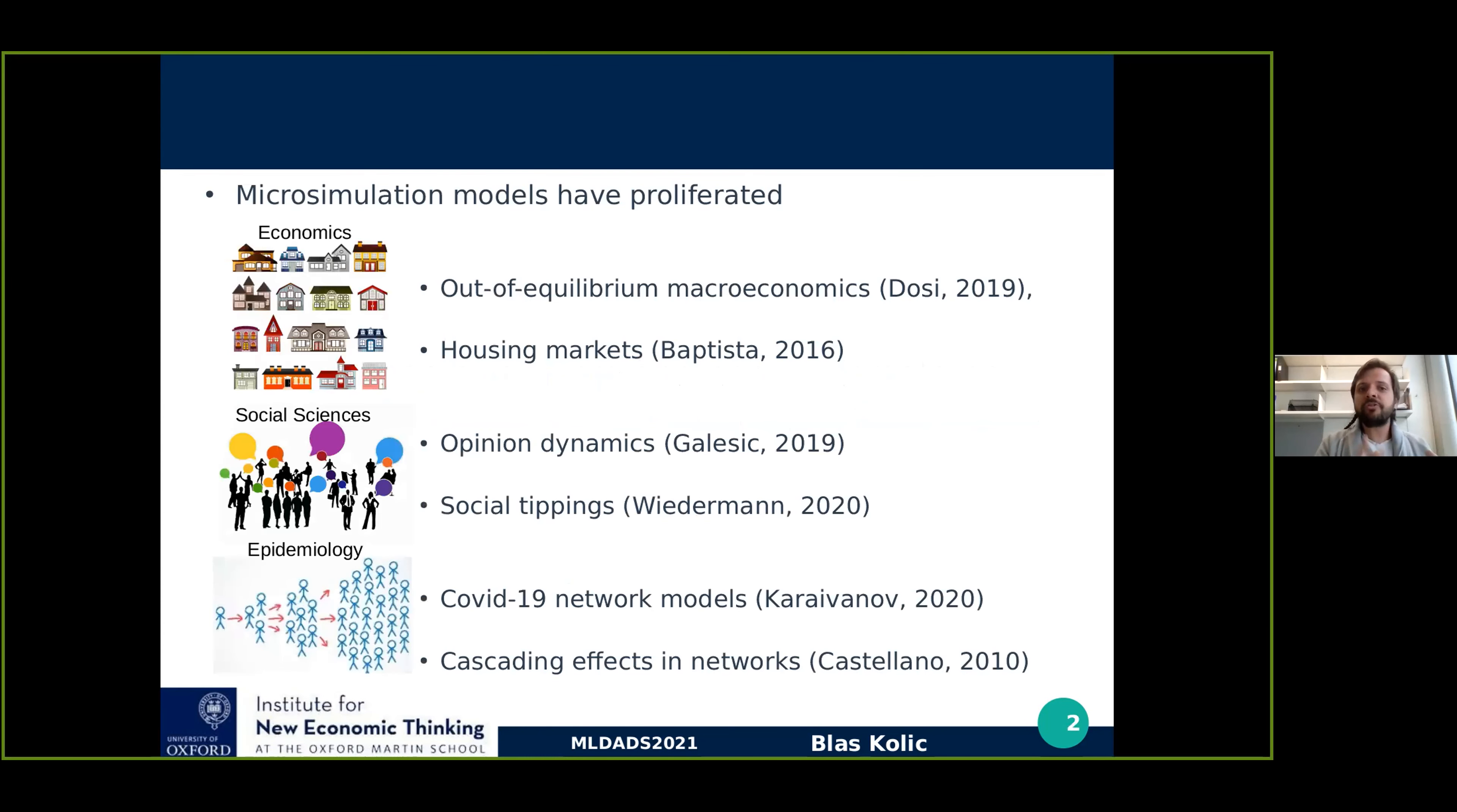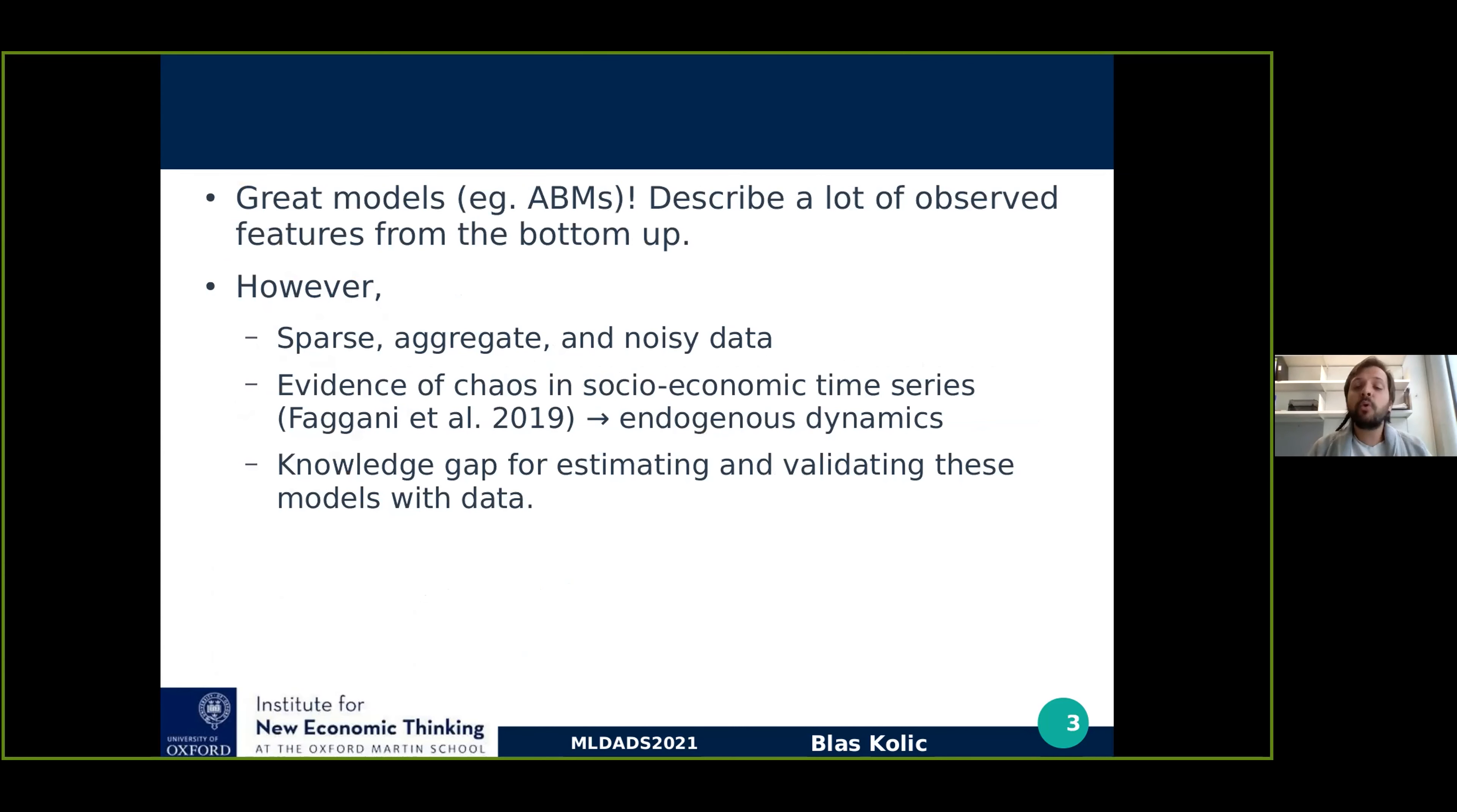Just a little bit to motivate this work - microstimulation models have proliferated in many research areas, such as economics, complexity economics with out of equilibrium macroeconomics or housing market agent-based models. Also in the social sciences with opinion dynamics or social tipping points, with agent-based models or network models. Now it's very relevant in epidemiology with network models and percolation models with cascading effects on networks. There are great models like agent-based models and network dynamic models, and in general, microstimulation models, which describe a lot of the observed features from the bottom up. We have a really sensible understanding of the interaction rules of what's happening in underlying dynamics.